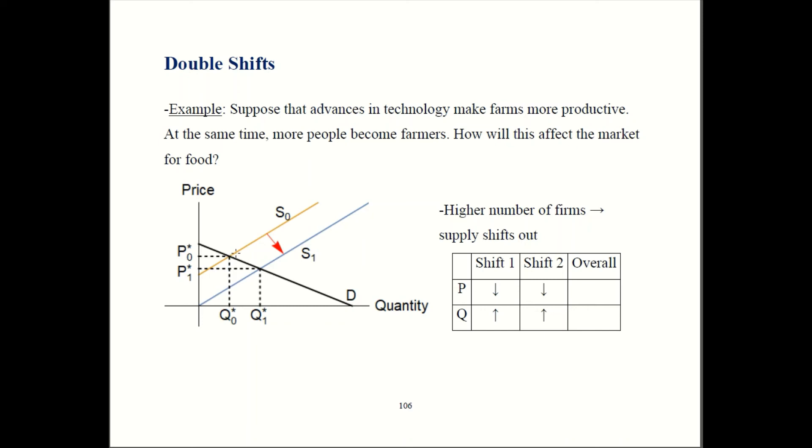Once supply shifts, we're going to be out here, and that meets demand at this point. Price is going to become P1, which is lower than P0. Quantity goes up to Q1. So, price falls, quantity rises.